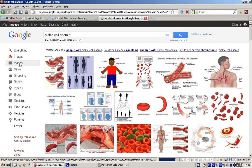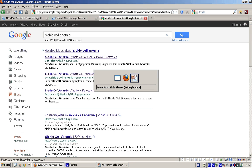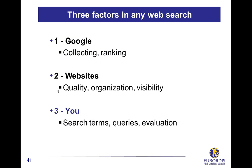Be aware that there are three actors in any web search. Without search engines, without Google, a web search would be a tremendous challenge — Google is a major actor, collecting information and ranking results. Websites are in charge of the quality and organization of information, and also of its visibility through search engine optimization. And you — by identifying search terms, building relevant queries, and evaluating the quality of information — you are also an actor of a web search, and not the least.